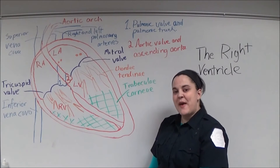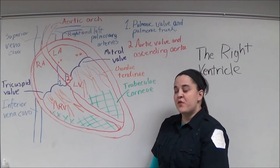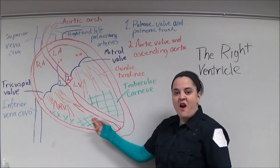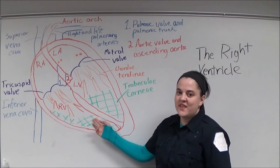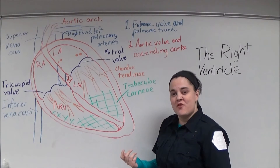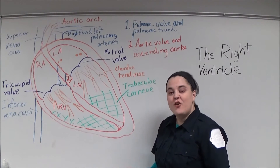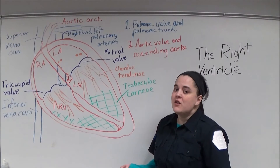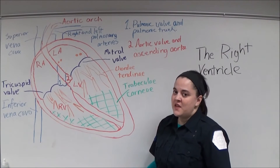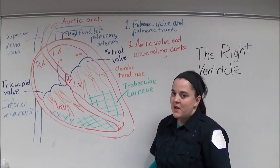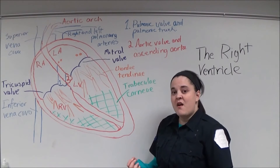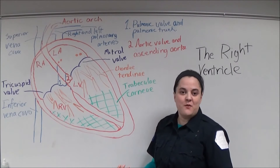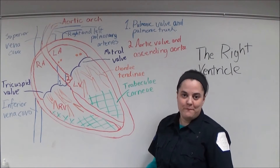The apex of both the right and left ventricles are covered with a lattice-like structure called trabeculae carnea, also known as Rathke's bundles, and they are muscular bands that are covered with endocardium.